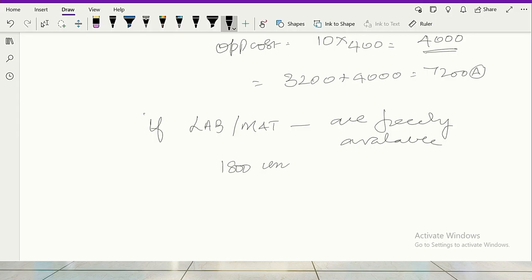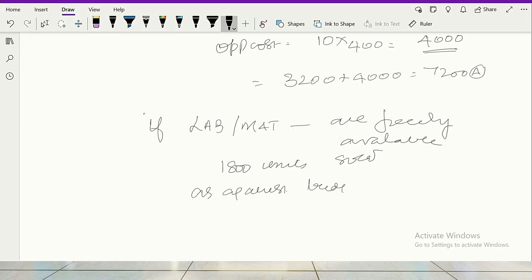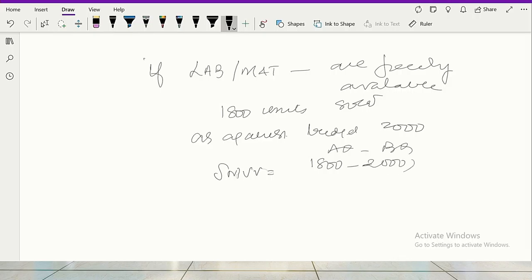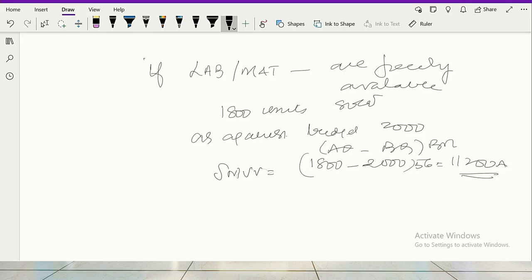Standard profit, that is 11,200. That is all. If there is no scarcity, that is if labor and materials are freely available, then the question is you sold 1800 units sold as against budgeted 2000. So that means sales margin, sales margin volume variance. That is how much, 1800 actuals, AQ minus BQ, 2000 into BM, standard margin, budgeted margin is 56 rupees. 11,200 rupees adverse.